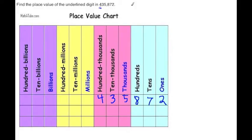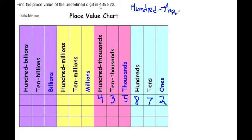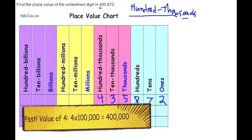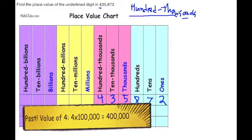So what do we do? We write the answer — it would be a hundred thousands. I'm writing with a pen so this is a little harder. And there you go, you have it.